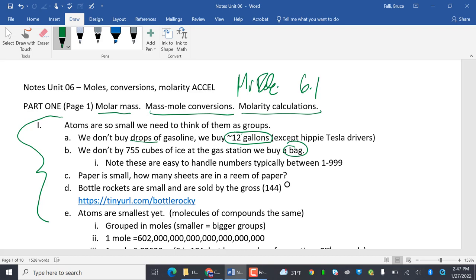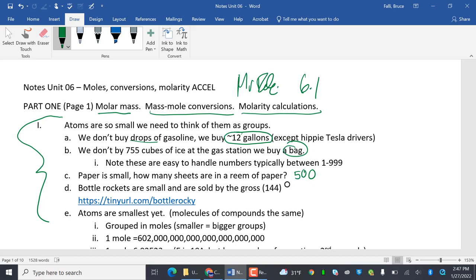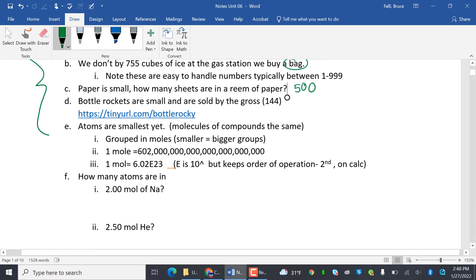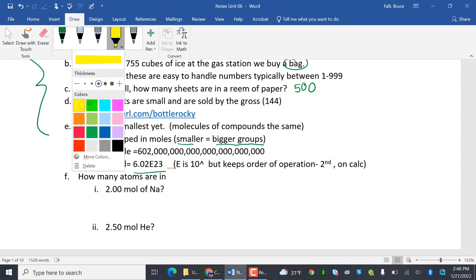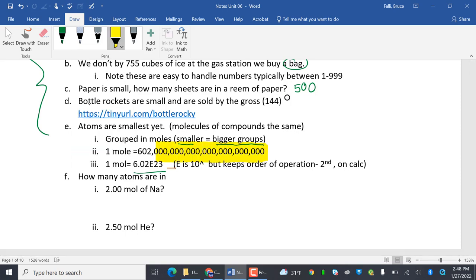We don't buy 755 cubes of ice at the gas station, we buy a bag. These are easy-to-handle numbers typically between 1 and 999. Paper is small, so how many sheets are in a ream? 500. Bottle rockets are sold by the gross, which is 144. Atoms are the smallest yet. So molecules of compounds are the same. They're so small we group them in these huge numbers. The smaller the thing is, the bigger the groups. So we're going to deal with moles, and 1 mole is 6.02 times 10 to the 23rd, which is this enormously beastly number.